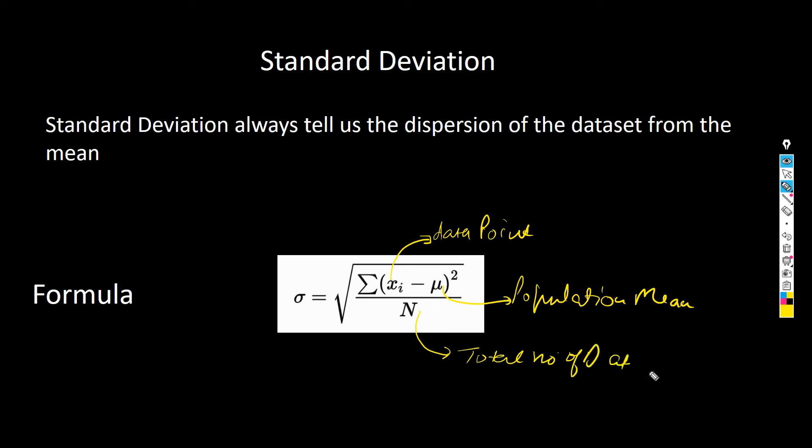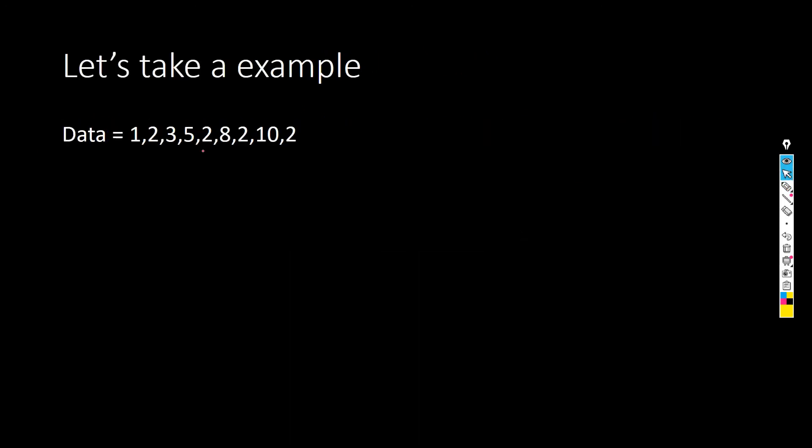To understand how we can calculate this, let's take a simple example. Suppose we have a data set: 1, 2, 3, 5, 2, 8, 2, 10, 2. With the help of this, first of all we need to understand how to calculate standard deviation.